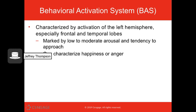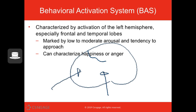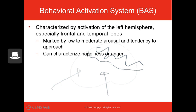We can look at emotion as an activation or inhibition in the brain. We have the behavioral activation system — the BAS — with activation in the left hemisphere, especially frontal and temporal lobes. This is low to moderate arousal with a tendency to approach. This covers happiness or anger — when you are angry at something, you want to go towards it. When you're happy, like somebody brought you cake, you want to go towards that cake. That's what we mean by a tendency to approach.